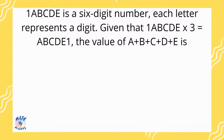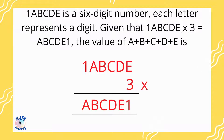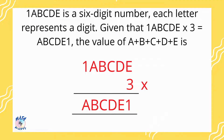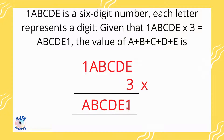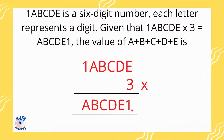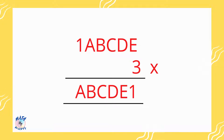For those who want to try this question on your own, please pause the video right here to try. Others please continue watching. Let me represent the question in an easy format. We know this is the six-digit number which is 1abcde, and when you multiply this six-digit number by 3 you get the result abcde1. Let's zoom in and find out the letters.